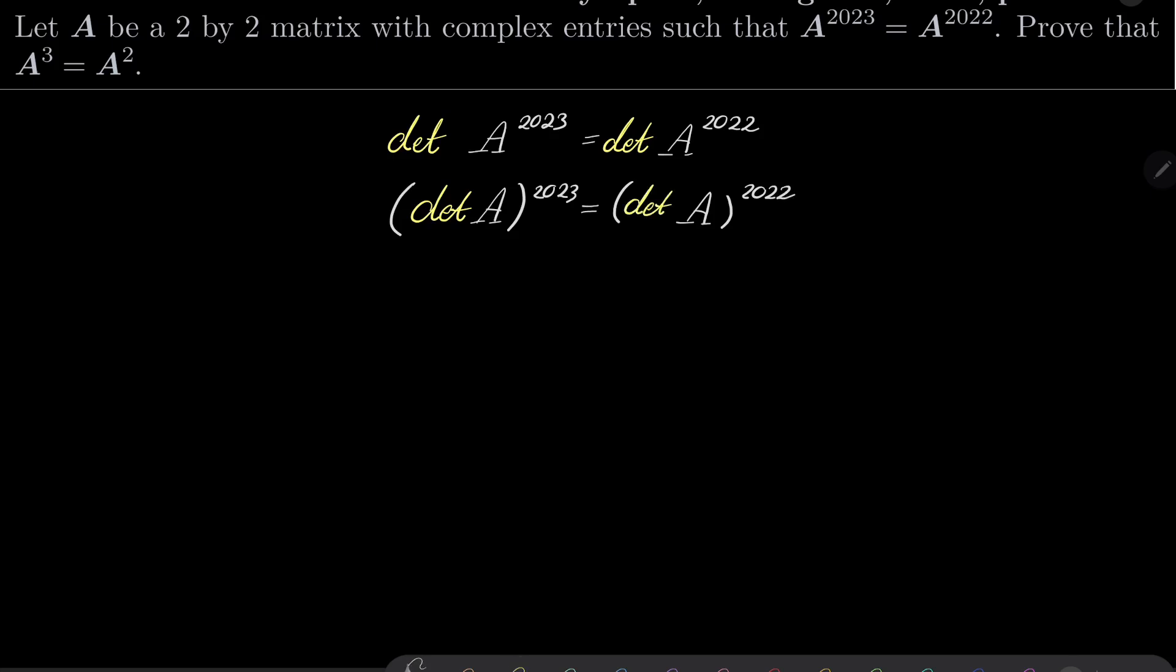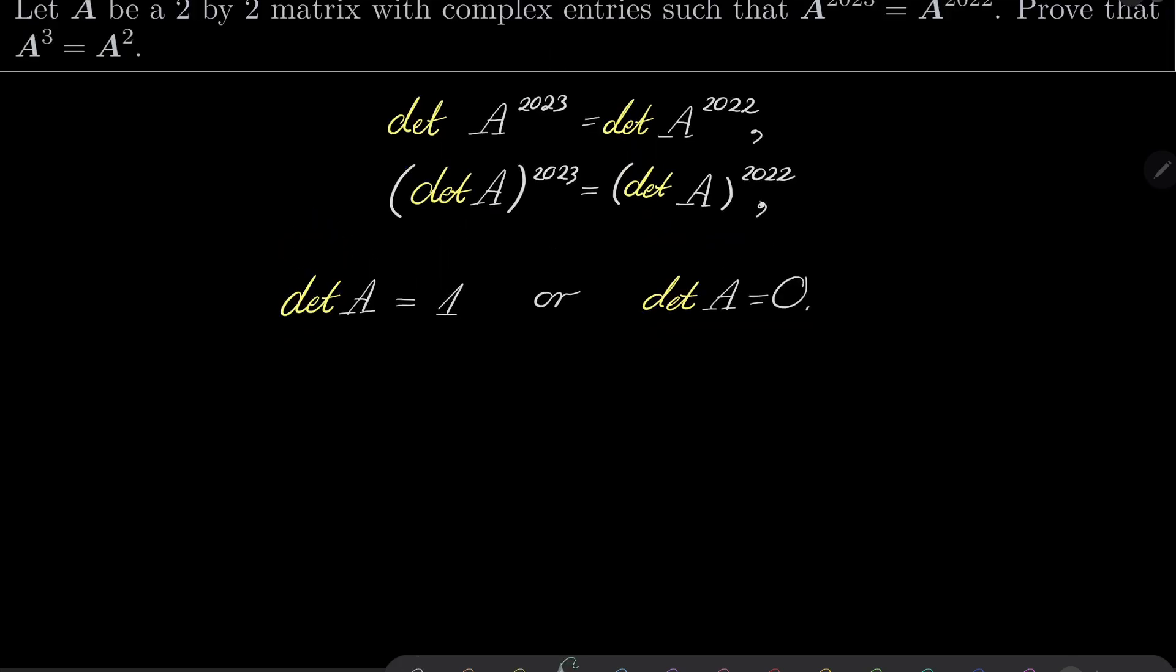Alright, and now notice that either the determinant is zero or if it's not, it must be one. So either the determinant of A is one or the determinant of A is zero. And let's consider these two cases separately.